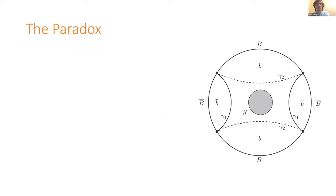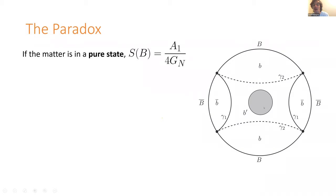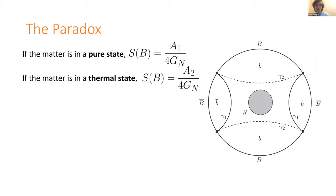Now we're ready to set up a paradox. Consider the case where all the matter in the middle is in some typical pure state — the geometry is the same, but the von Neumann entropy is zero. So the generalized entropy of gamma one is just A1/4G, which is smaller than A2. The entropy of boundary region B is A1/4G. If the matter is in a thermal state, then A1/4G + S > A2/4G, so the extremal surface is gamma two and the entropy is A2/4G.